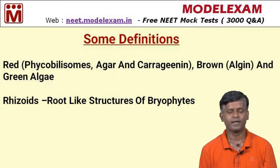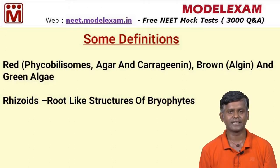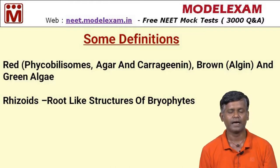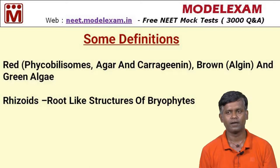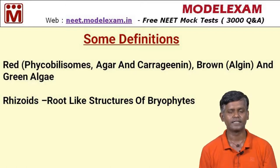Algae are mainly classified as red algae (Rhodophyceae), green algae (Chlorophyceae), and brown algae (Phaeophyceae). Red algae are characterized by phycobilisomes and contain agar and carrageenan. Brown algae are rich in algin, and green algae are photosynthetic.